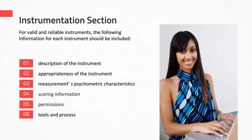Next, talk about the scoring information — how is the instrument scored, what's the scoring range (does it range from 0 to 36 or 0 to 70?), and what do those scores mean? Does a high score mean high community, high happiness, or high joy? Does a low score mean low happiness, low community, or low joy? Explain how to interpret the scores.